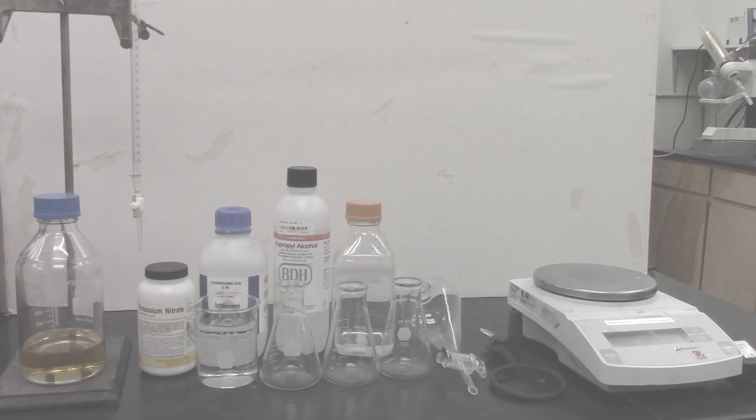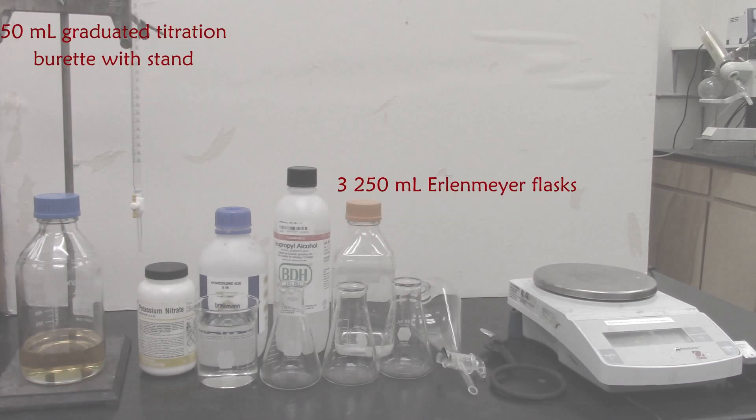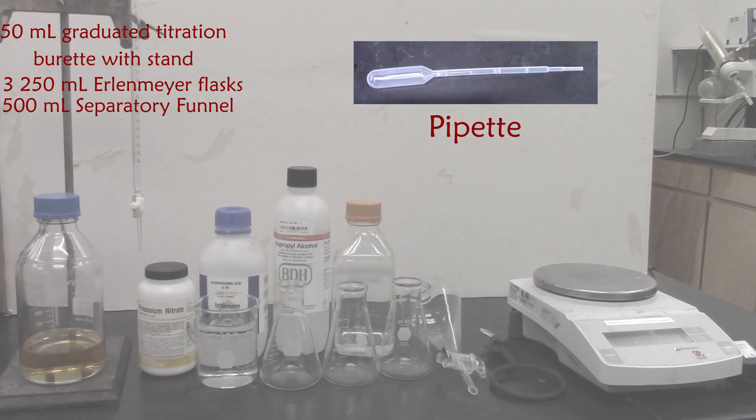To conduct the exercise, you will need one 50 mL graduated titration burette with a stand, three 250 mL Erlenmeyer flasks, a 500 mL separatory funnel, a pipette, and a weighing scale.